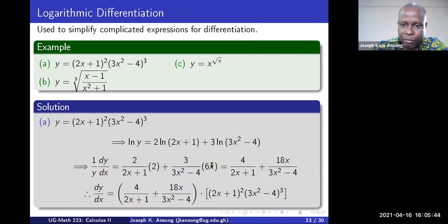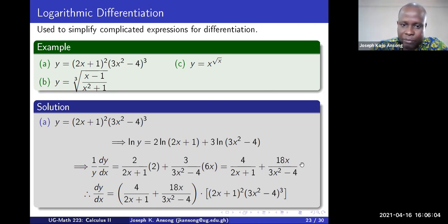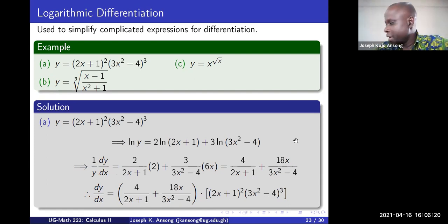Simplifying: the first term becomes 4/(2x+1) and the second becomes 18x/(3x²−4). Note that you want dy/dx, but what we have is (1/y)·(dy/dx), so you must multiply both sides by y. When you do that, dy/dx equals all of this multiplied by y — and y is the original expression — so the derivative becomes that. That is the point of logarithmic differentiation.